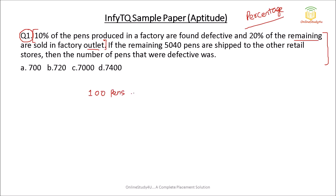You are free to assume any value — 200, 400, 500, 1000, or X, Y, Z — but if you assume any value other than 100, your calculation will become more complicated, though you will still get the answer. So with 100 pens, 10% is defective. That means 90% of the pens will be good, so 90 pens are good.